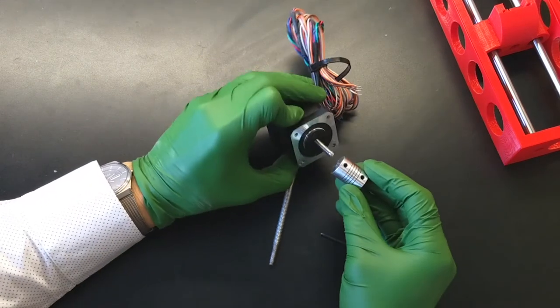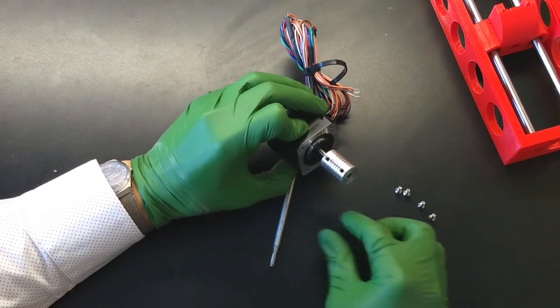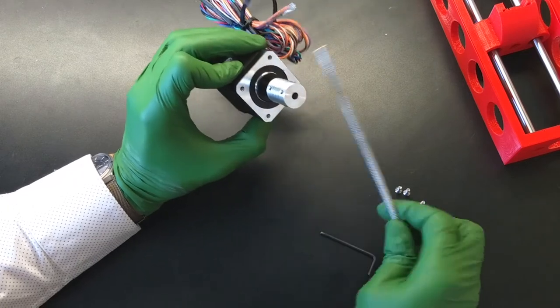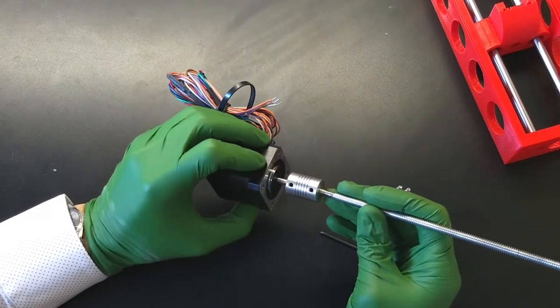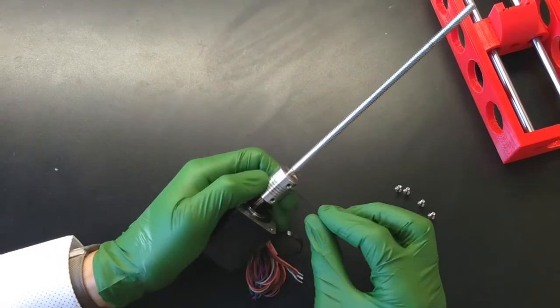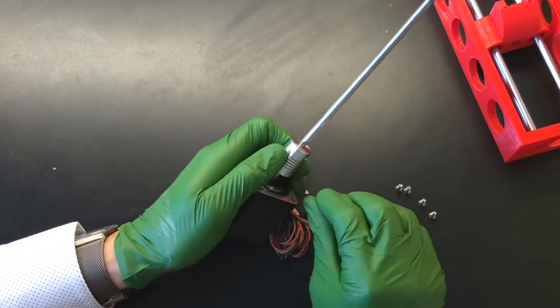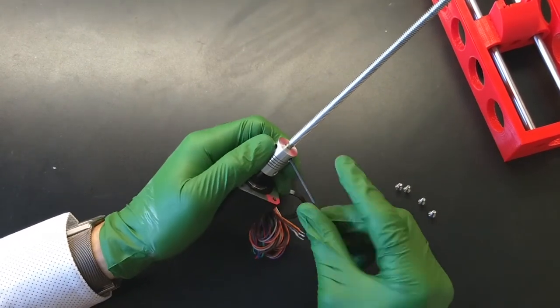Connect the coupler to the motor shaft and insert the threaded rod into the other end. I removed material from one end of the threaded rod using a hardened steel file. It doesn't need to be perfect.